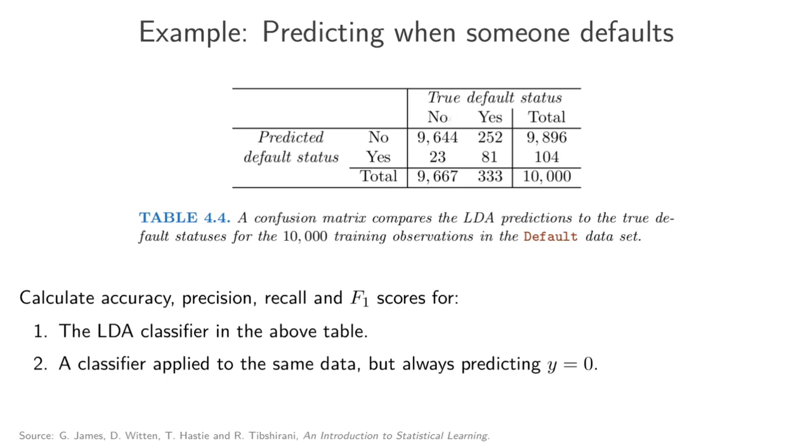So here we've got things that are really negative and things that are really positive. In other words, no, the person doesn't default, or yes, the person defaults. Here we've got the predictions of our model. So here we predicted no, the person won't default, and here we predicted yes, the person did default. And what we want is to calculate accuracy, precision, and recall, and F1 for this classifier model.